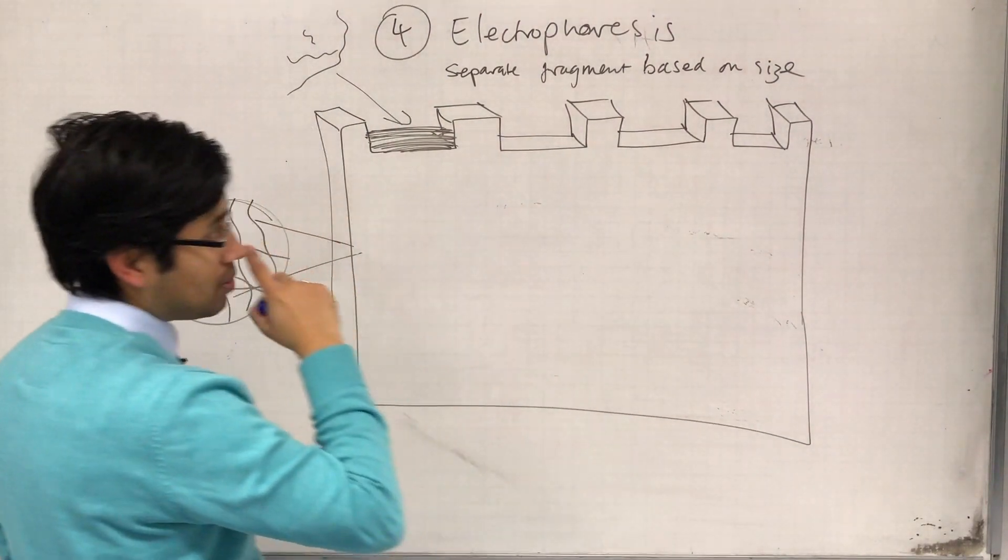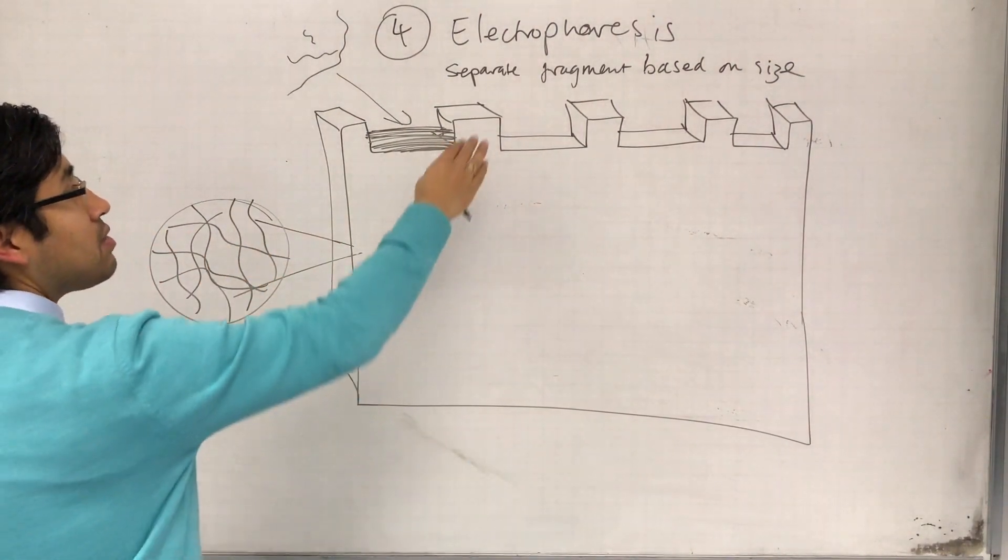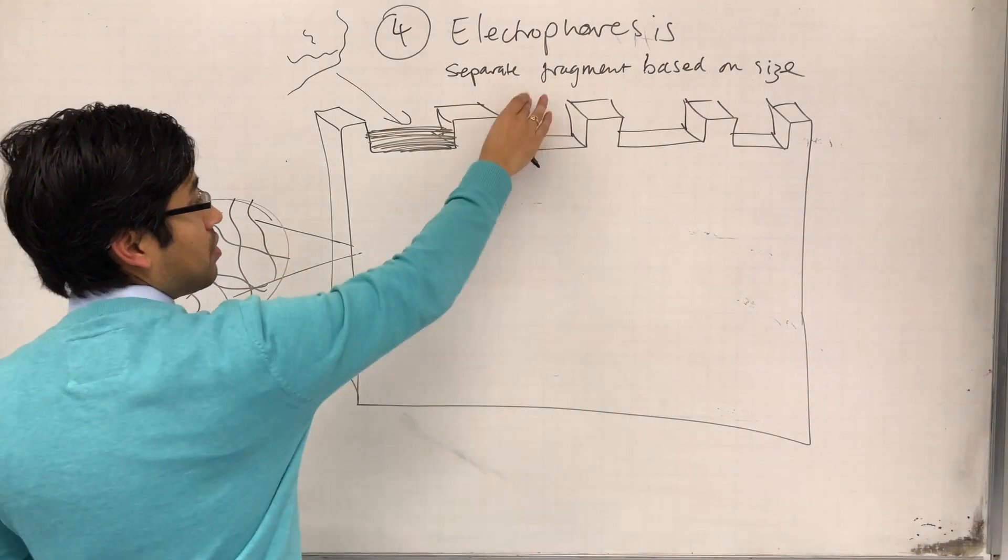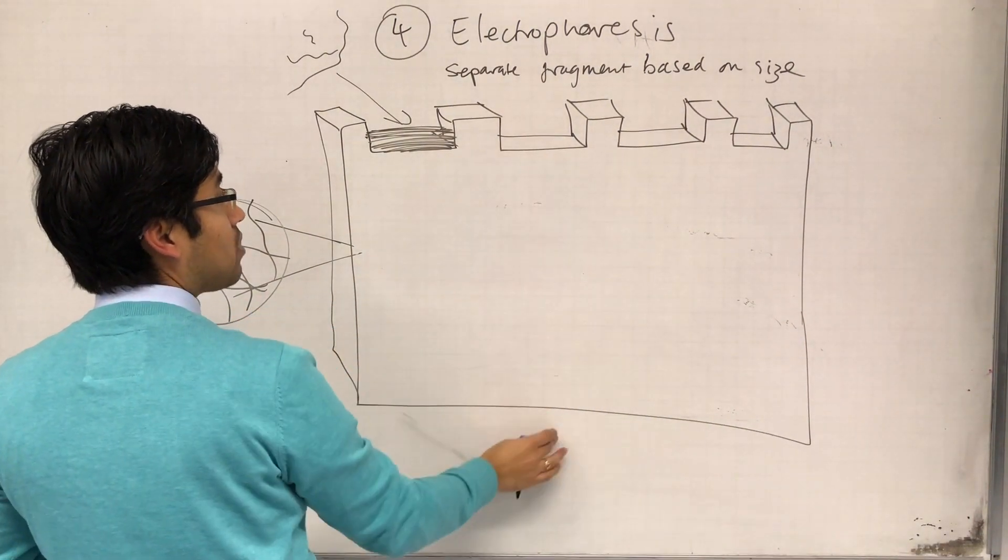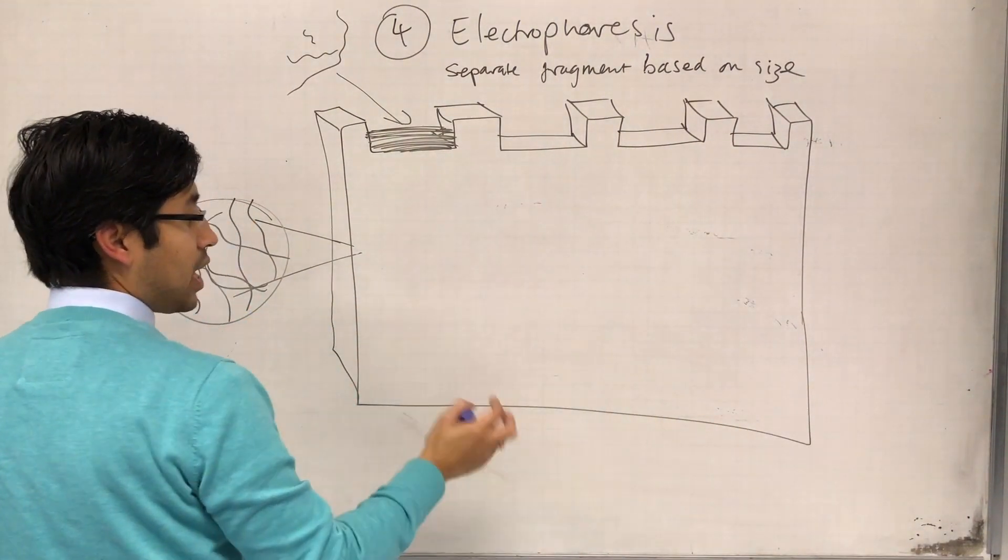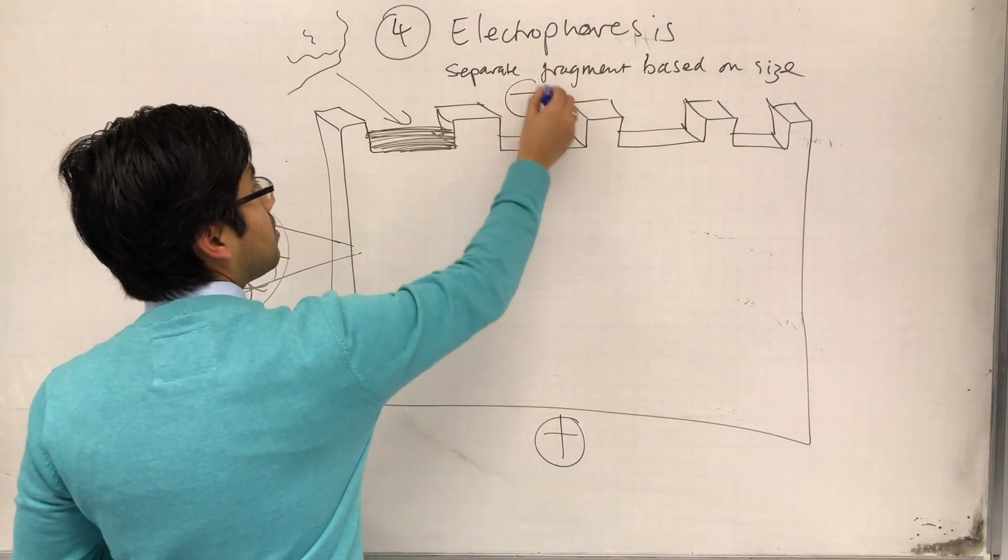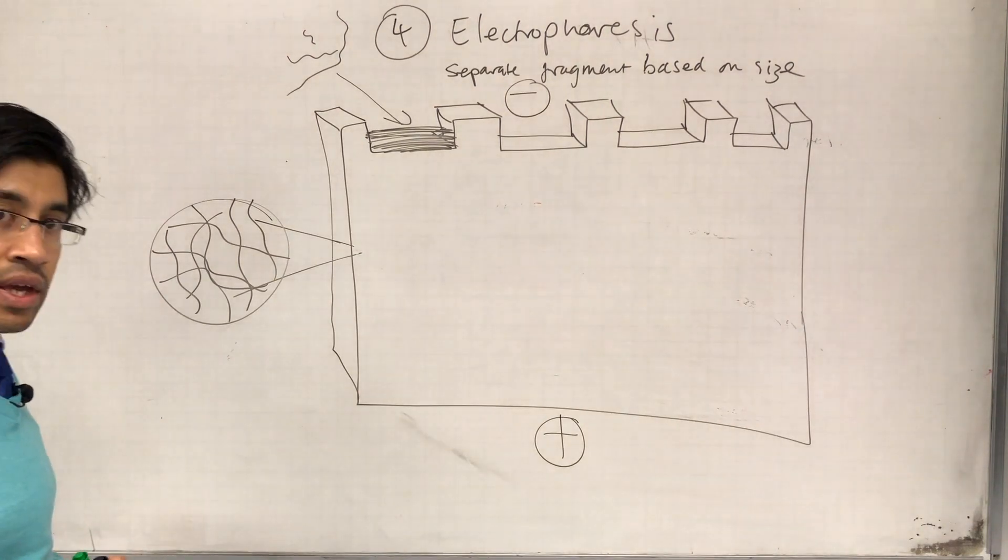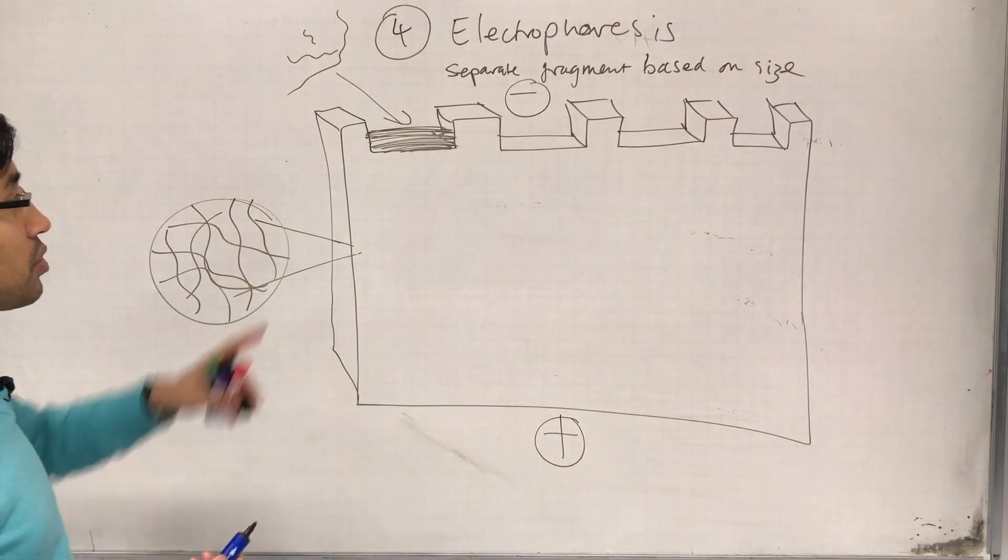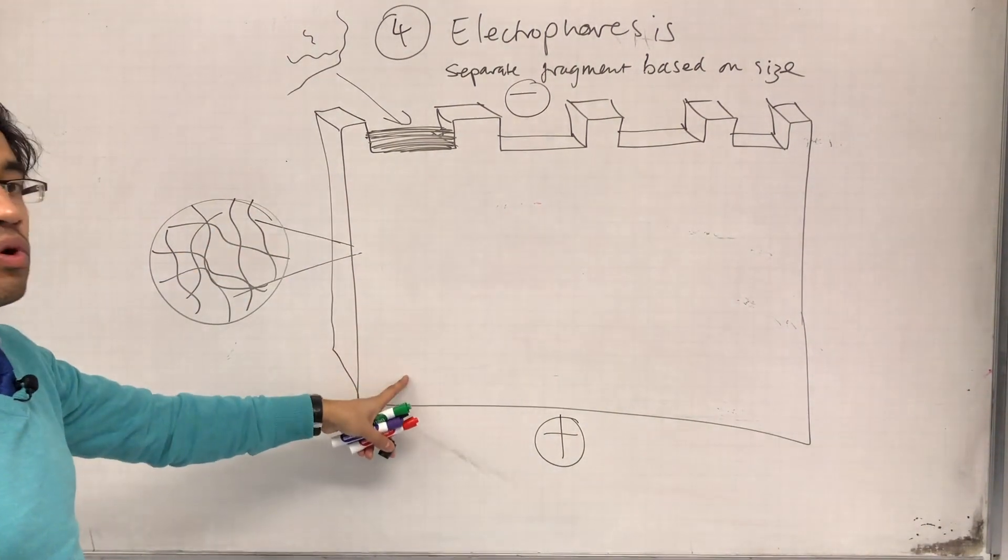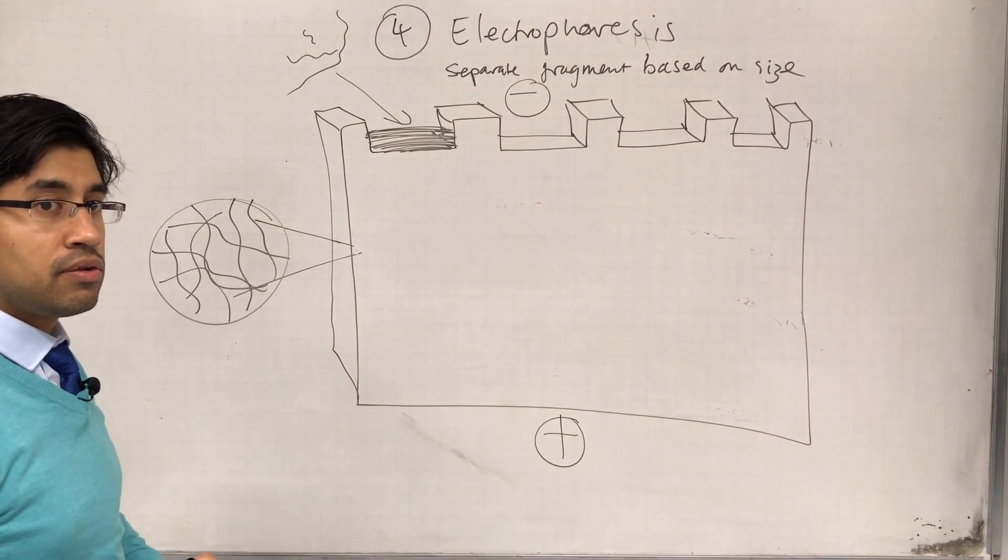DNA is negatively charged, and what we're going to do is place an electric field across this agarose gel, such that we are going to have a positive charge at this end, and a negative charge at that end. So the DNA molecules move towards the positive charge.